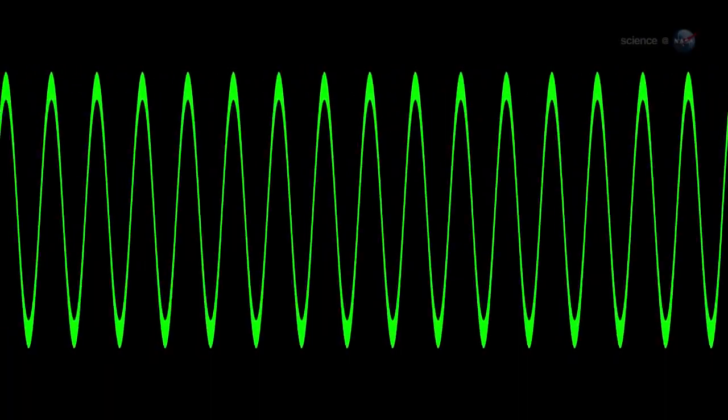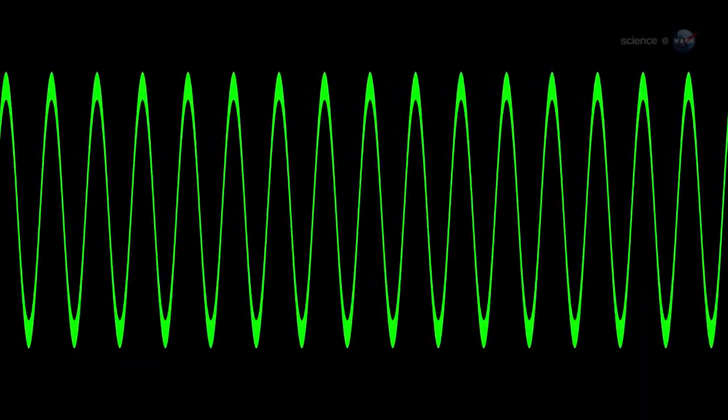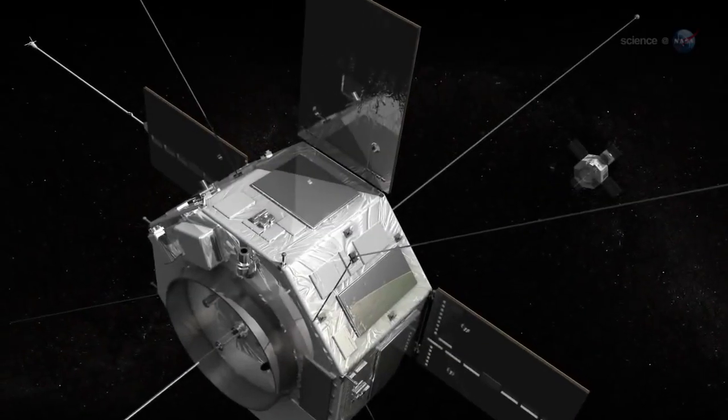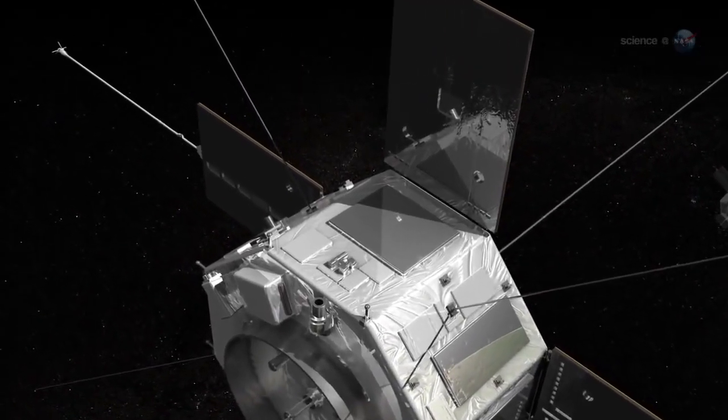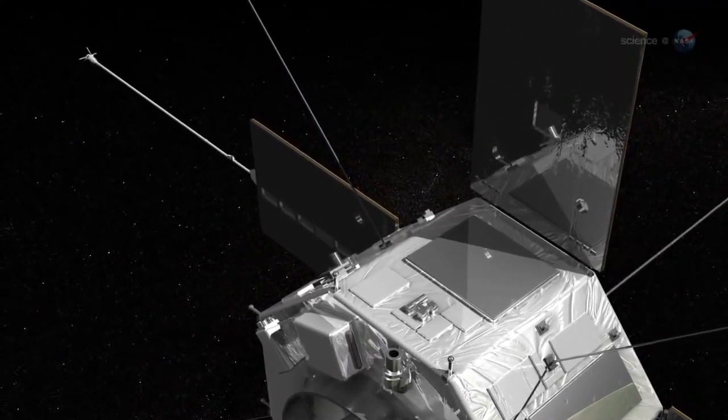He's careful to point out that these are not acoustic waves of the kind that travel through the air of our planet. Chorus is made of radio waves that oscillate at acoustic frequencies between 0 and 10 kHz. The long antennas of the radiation belt storm probes are perfect for detecting these kinds of waves.